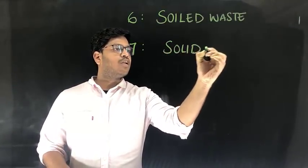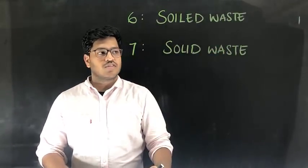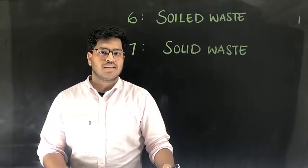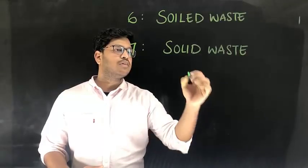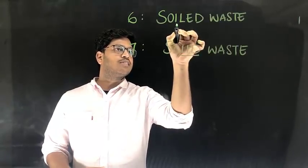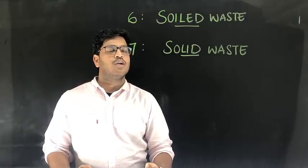Whereas category 7 is solid waste. There is a difference between soiled and solid waste. Solid waste includes all plastic, i.e. IV tubes, catheters, urine bags etc. Whereas soiled waste includes all items which are contaminated with body fluids.